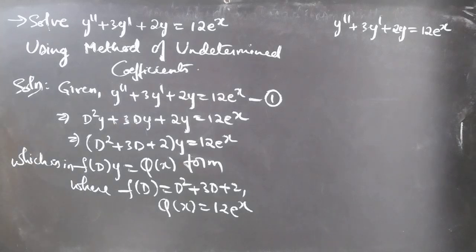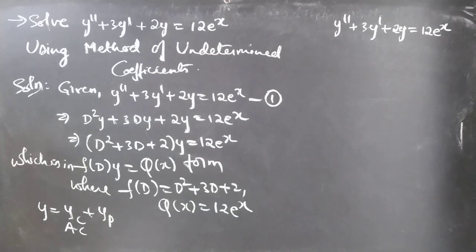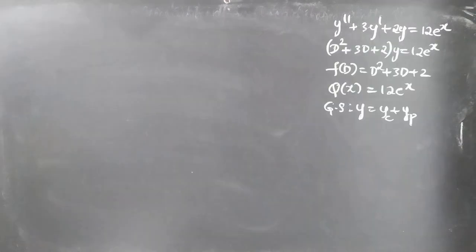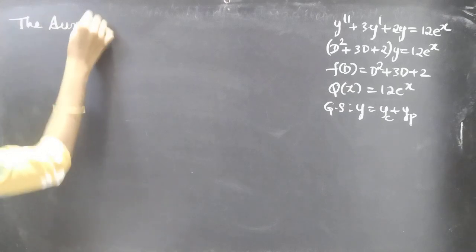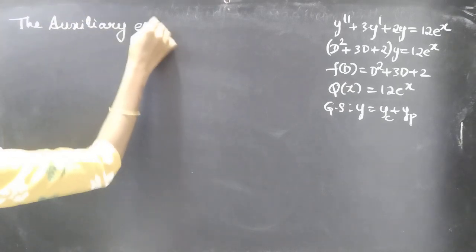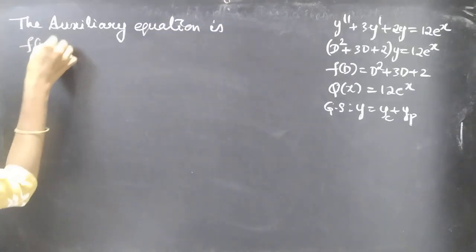We'll find the general solution to this equation using y = yc + yp. We'll find yc using the auxiliary equation, and we'll find yp by a trial method. We'll choose a yp such that it satisfies the given differential equation — we can see that later.